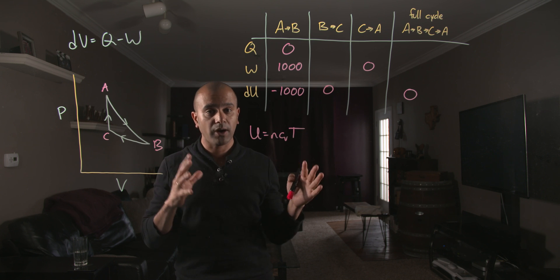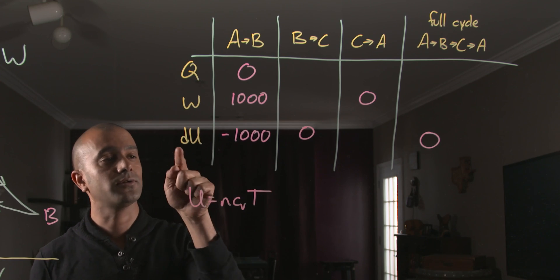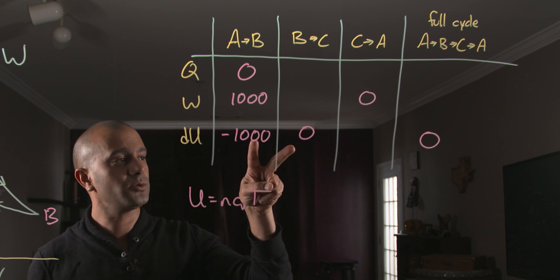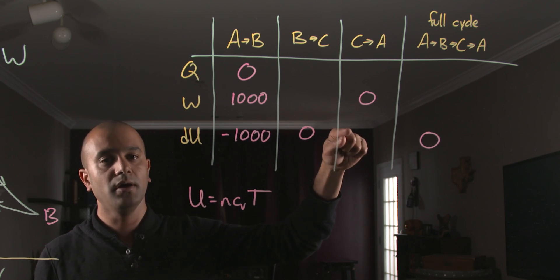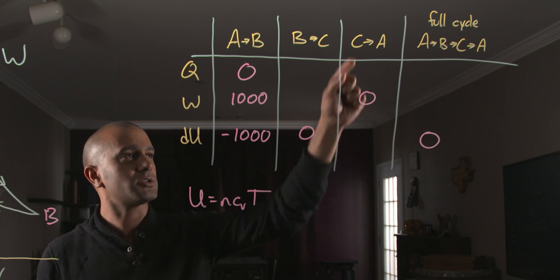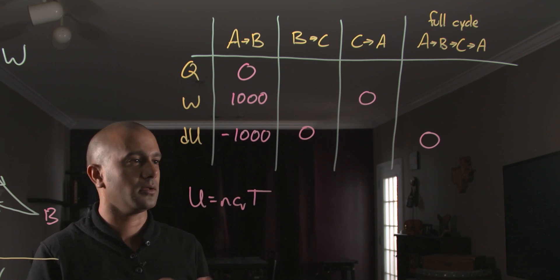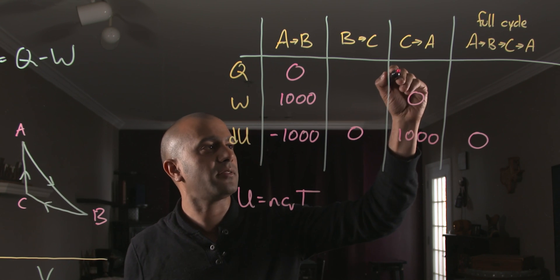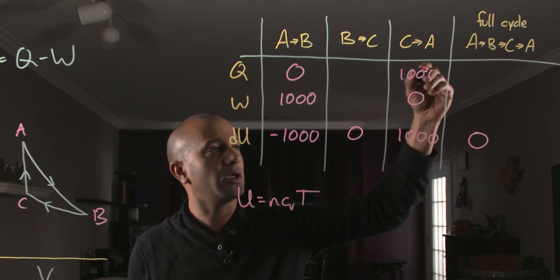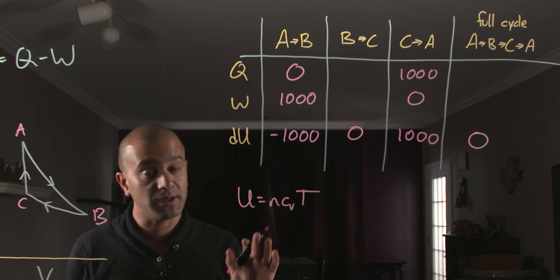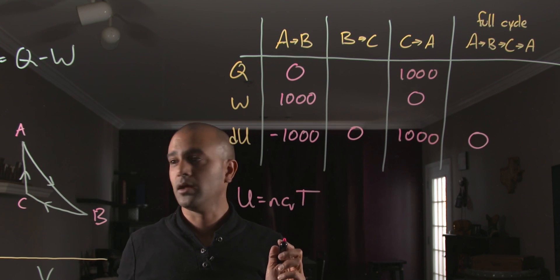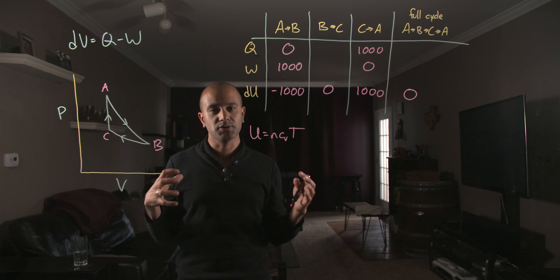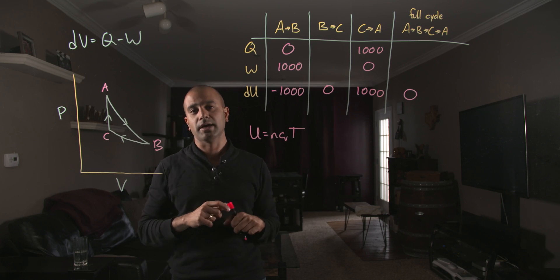Now we see the real power of the thermodynamic Sudoku trick. Because we know the internal energy change in two legs and in the full cycle, we can immediately fill in the internal energy change for the third leg — the sum of the three must equal the last column. That means the total internal energy change on the third leg must be 1,000 joules. Applying the first law again, this means that on that particular leg there were 1,000 joules of energy input into the gas.